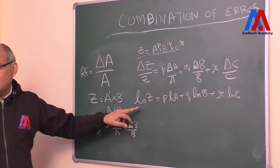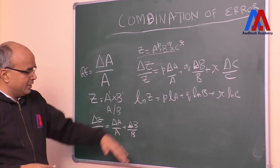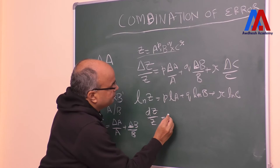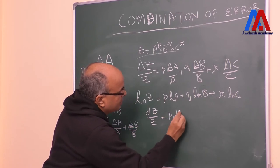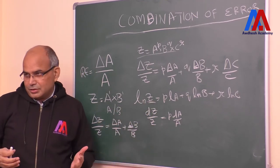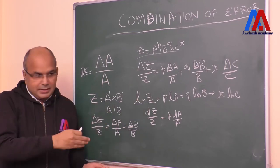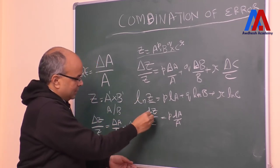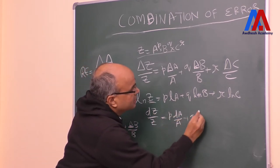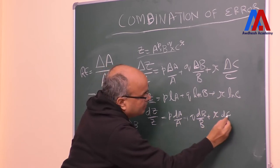The natural log is called ln. Now if we differentiate this with respect to the variables, what happens? dz upon z will be equal to p times dA upon A — because the differentiation of ln(z) is 1 by z. So in this way, dz by z is equal to p times dA by A, plus q times dB by B, plus r times dC by C.